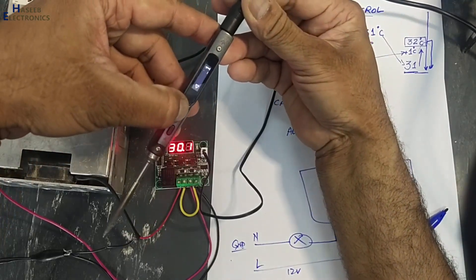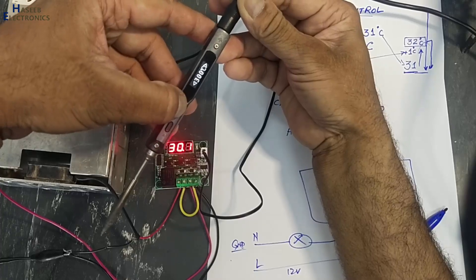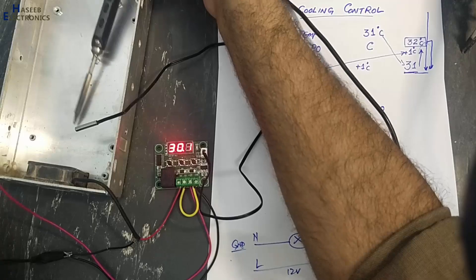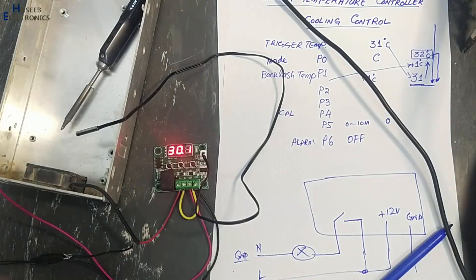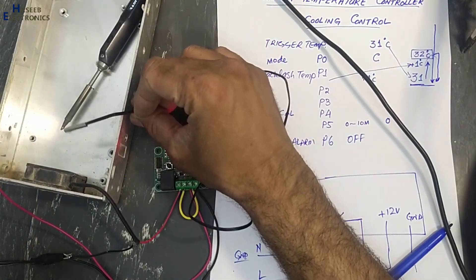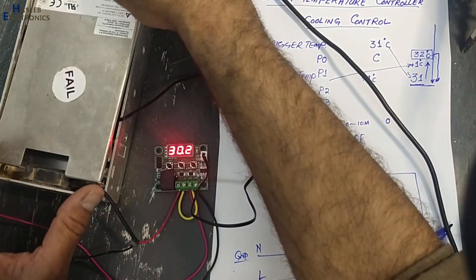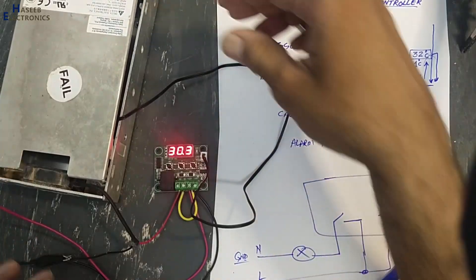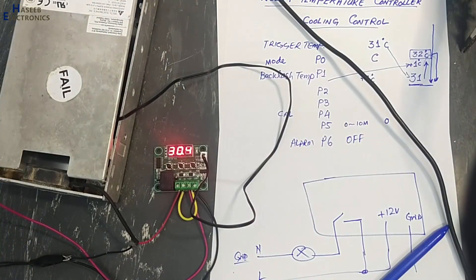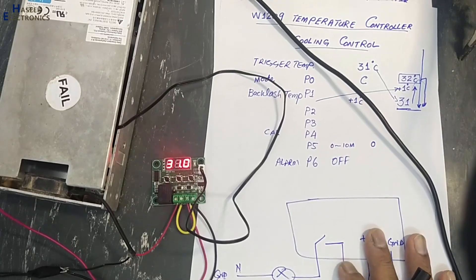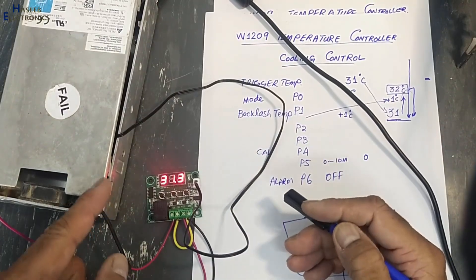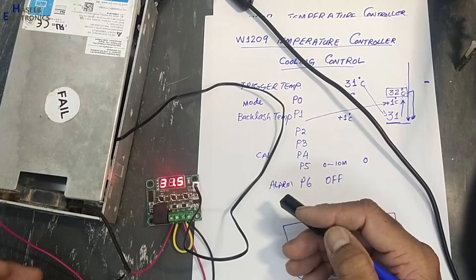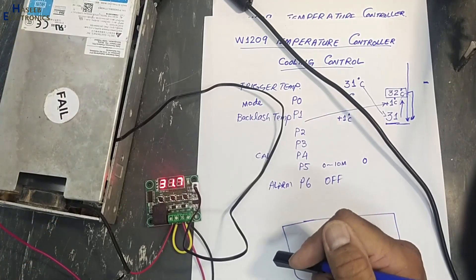I connected 12 volts for the PCB and 12 volts for the fan. When the temperature condition is met, it switches the positive voltage to the fan. To demonstrate, I will place this soldering iron inside the box, and here is the temperature sensor.